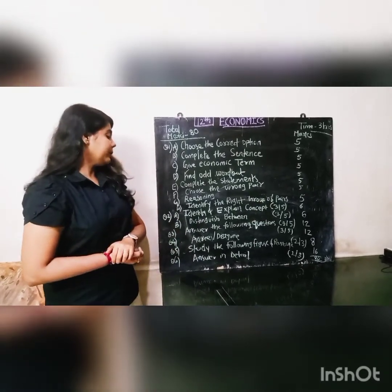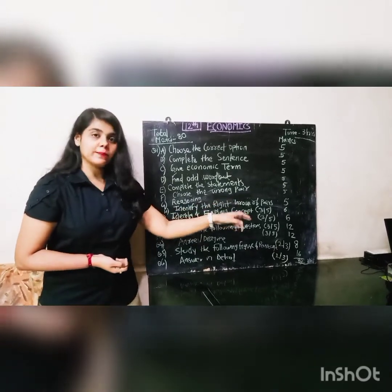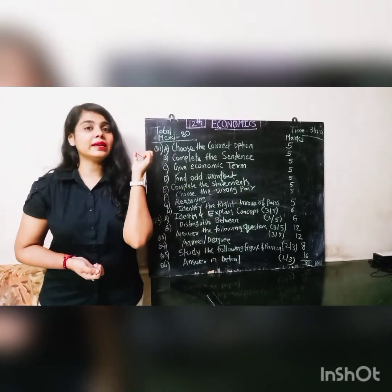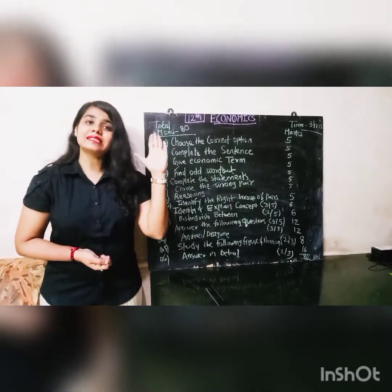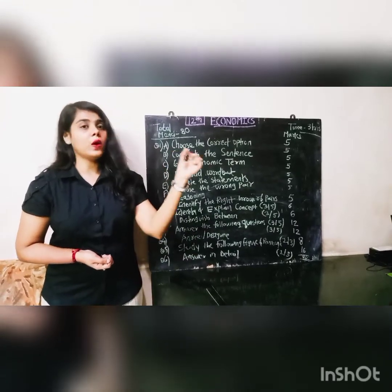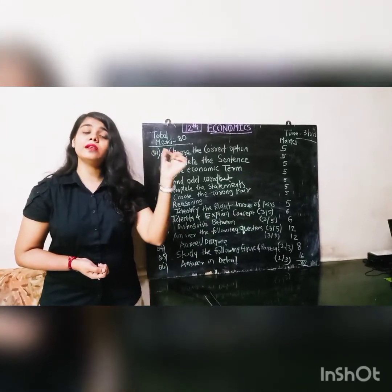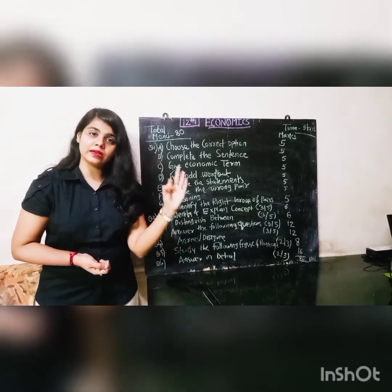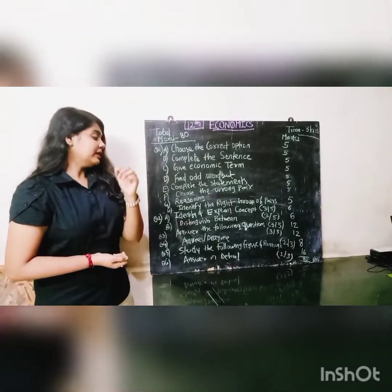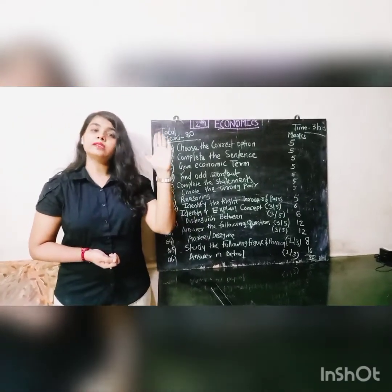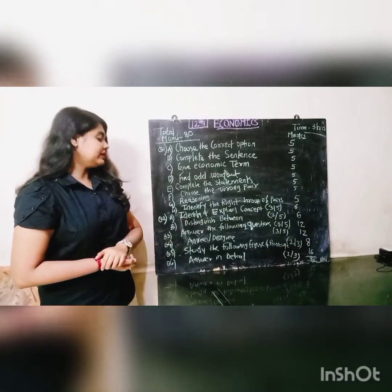Question number two has sub-questions A and B. 2A is Identify and Explain the Concept — you will be given a sentence, you have to identify the concept and then explain it. Five statements will be given and you have to attempt three, making it six marks total — so one concept is for two marks. 2B is Distinguish Between, also for six marks — five pairs will be given and you have to write three, each carrying two marks.